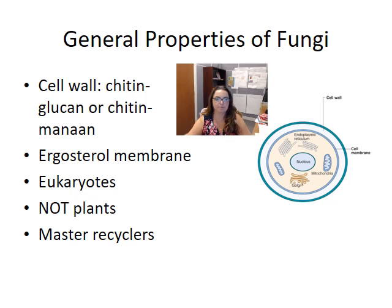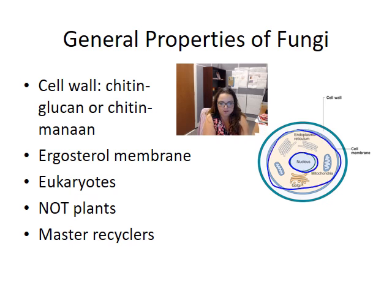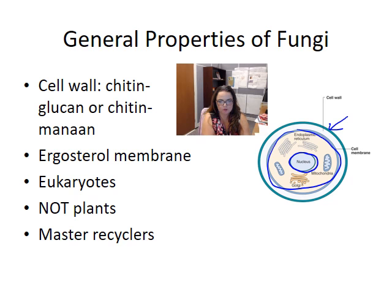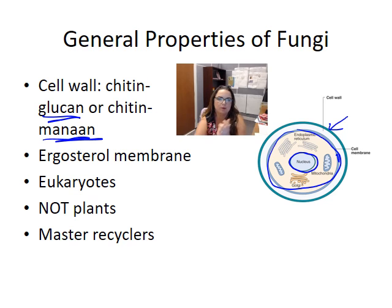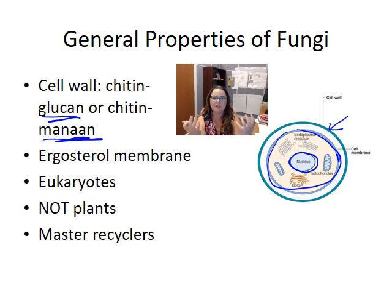As for general characteristics: fungi are eukaryotes, meaning they have a true nucleus, true membranes, and true organelles — mitochondria, endoplasmic reticula, Golgi, ribosomes, and so on. They all have a rigid cell wall composed of a proteinaceous structure called chitin, which can be paired with glucan or mannin. There is a cell membrane inside that contains ergosterol — a sterol not unlike cholesterol, but functionally different, forming a similar role to cholesterol in our cells.